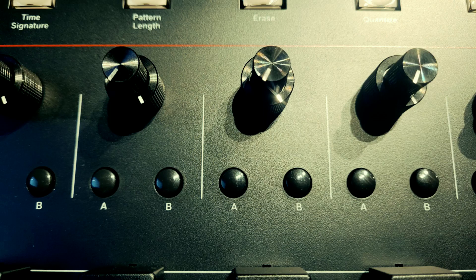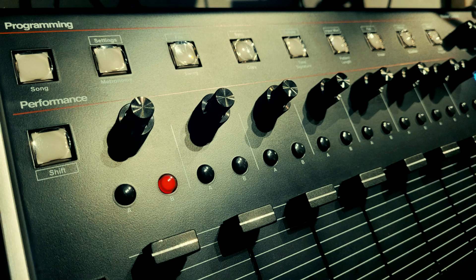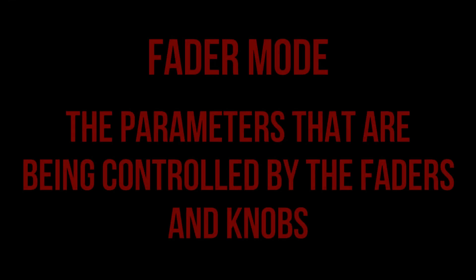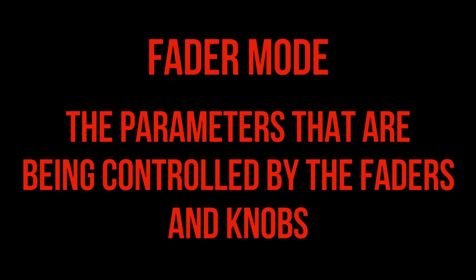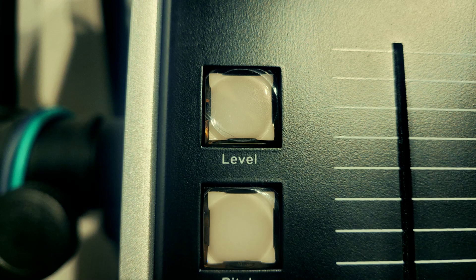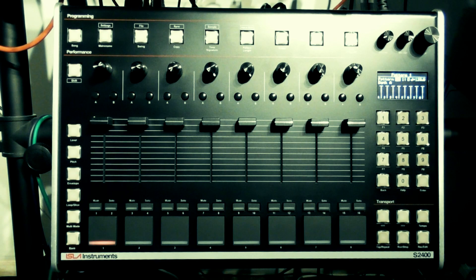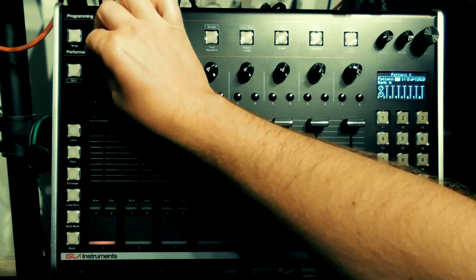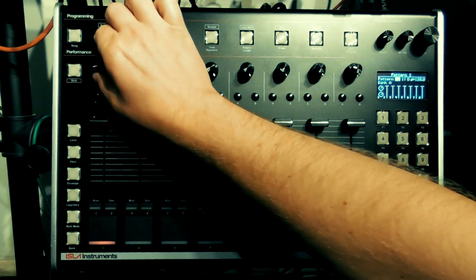These are multi-purpose and their function changes depending upon what fader mode you're in. Fader modes are the parameters being controlled by the faders and knobs. This is defined by the buttons on the left-hand side. If none of the buttons are selected you are in mixer mode, in which case the concentric knobs control filter cutoff and resonance.